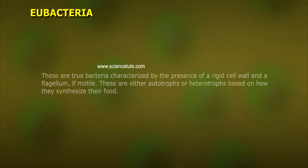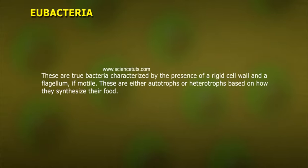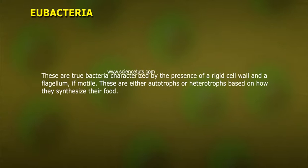Eubacteria: These are true bacteria characterized by the presence of a rigid cell wall and a flagellum if motile. These are either autotrophs or heterotrophs based on how they synthesize their food.